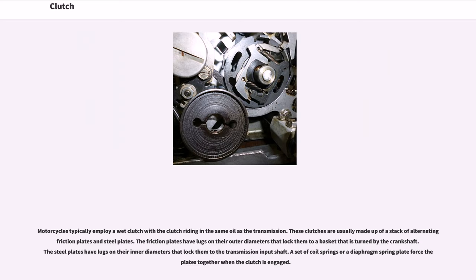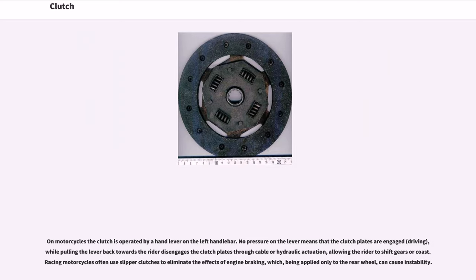Motorcycles typically employ a wet clutch with the clutch riding in the same oil as the transmission. These clutches are made up of a stack of alternating friction plates and steel plates. The friction plates have lugs on their outer diameters that lock them to a basket turned by the crankshaft, while the steel plates have lugs on their inner diameters that lock them to the transmission input shaft. A set of coil springs or a diaphragm spring forces the plates together when engaged. On motorcycles, the clutch is operated by a hand lever on the left handlebar. Racing motorcycles often use slipper clutches to eliminate the effects of engine braking, which, being applied only to the rear wheel, can cause instability.